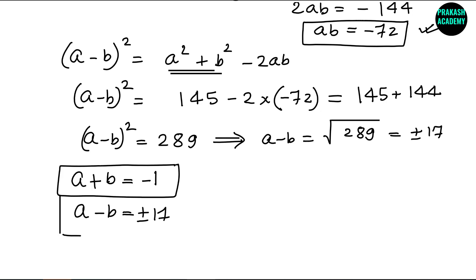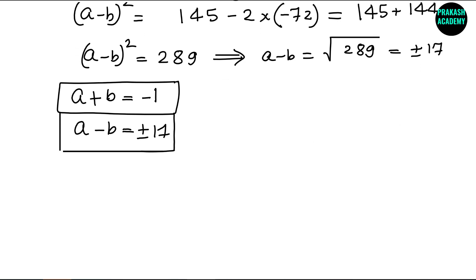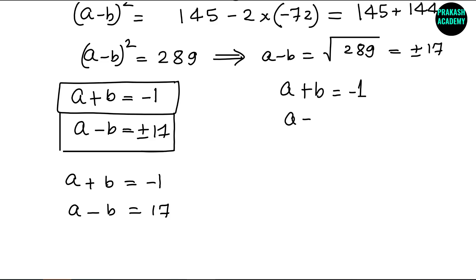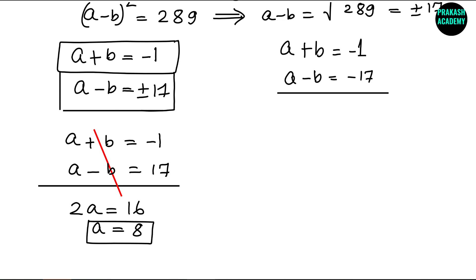Now we can solve using two cases. Case 1: A plus B equals minus 1 and A minus B equals 17. Adding these two equations, the B terms cancel, giving 2A equals 16, so A equals 8. Substituting back, 8 plus B equals minus 1, so B equals minus 9.